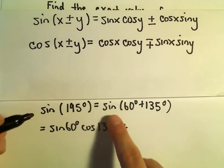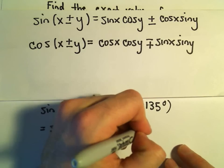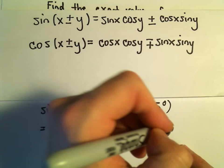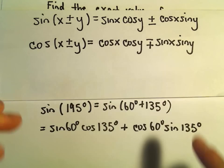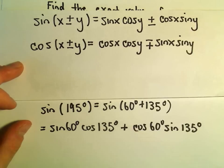And then it says we use cosine of 60 degrees, and then we'll use sine of 135 degrees. So I'm just using my very top identity.